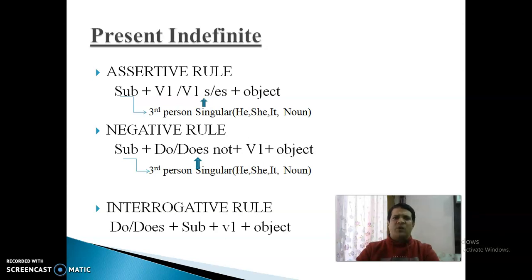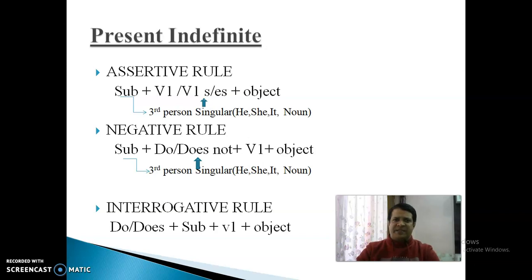Third Person Singular कौन से होते हैं? He, She, It, या कोई भी Noun — यानि Naming Words, चाहे वो Name of Place हो, Person हो, या Name of Thing हो। जब Subject He, She, It या कोई Noun होगा, तब Verb की First Form के साथ S या ES use करते हैं। इसके इलावा — First Person, Second Person, या Third Person Plural Subject के साथ — अकेली Verb की First Form use करते हैं।